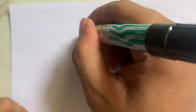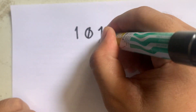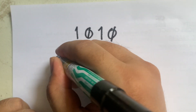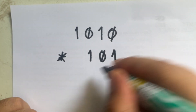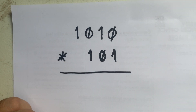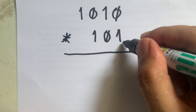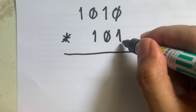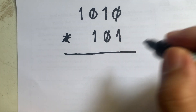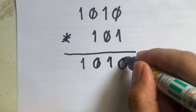Let's have one more multiplication example. We are given 1010 multiplied by 101. How do we multiply binary numbers? We take the last digit of our multiplier and multiply it to our multiplicand. The last digit is 1, so we just copy 1010.